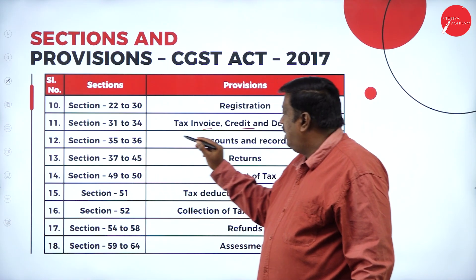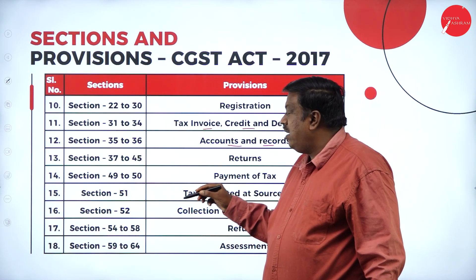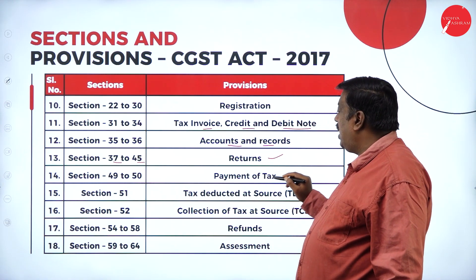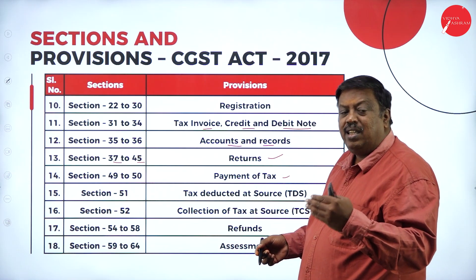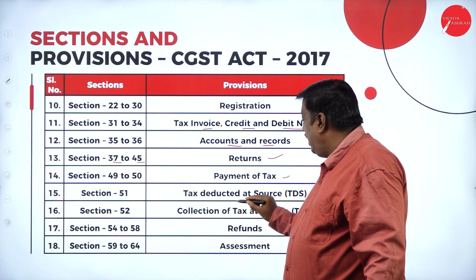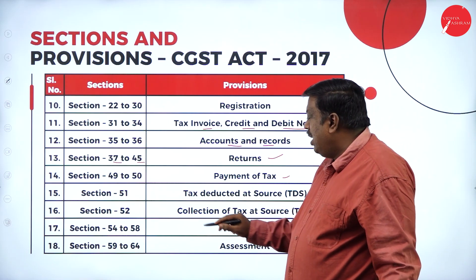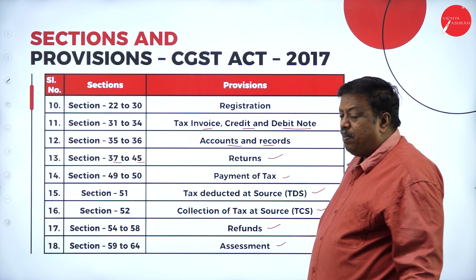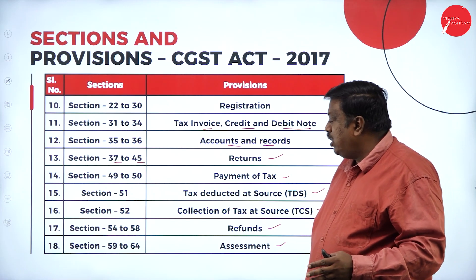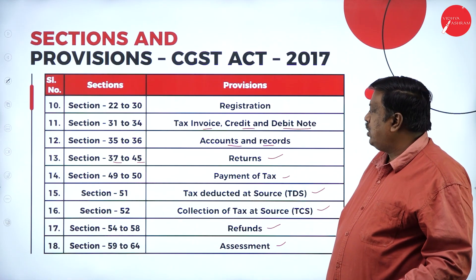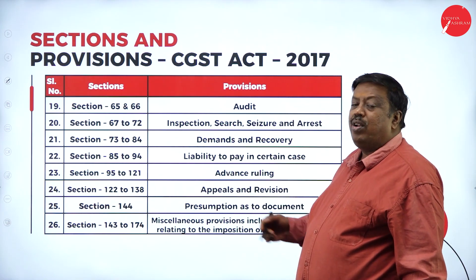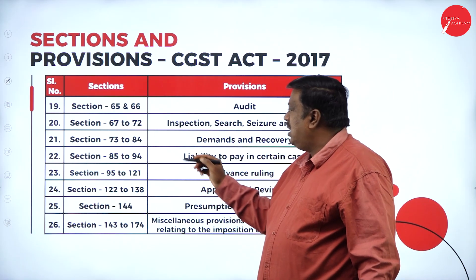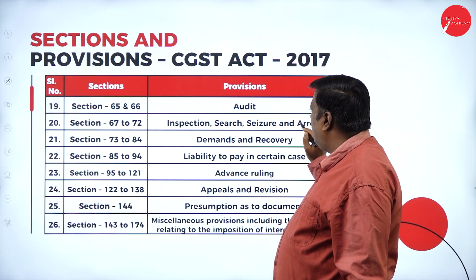Sections 31 to 34 cover tax invoices, credit notes, and debit notes. Sections 35 to 36 cover accounts and records of the business and the tax process. Sections 37 to 45 cover GST returns. Sections 49 to 50 cover payment of tax to the government — how much to pay, on what basis, and the remaining amount due. Sections covering TDS and TCS deal with tax deducted at source and collection of tax at source, with refunds covered from sections 54 to 58. Sections 59 to 64 cover various types of assessments, including partial and self-assessment.